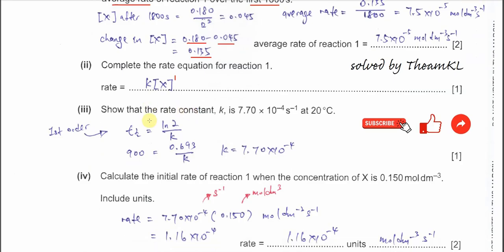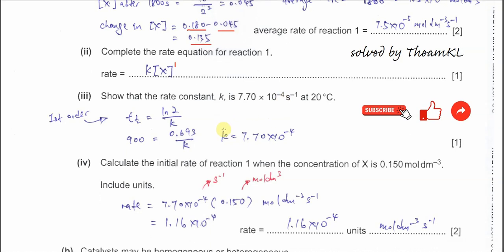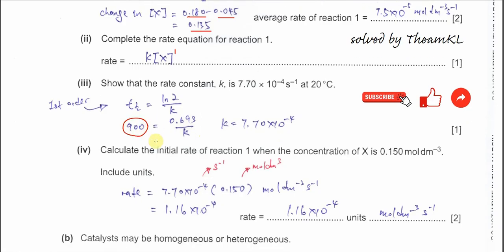Part 3: show that the rate constant k is 7.7 × 10⁻⁴ per second. For a first order reaction, we use the equation relating half-life to the rate constant: t½ = ln2 / k. ln2 equals 0.693. Since the half-life is 900 seconds, we can easily get k. So k = 0.693 / 900, giving k = 7.7 × 10⁻⁴ per second, as required.